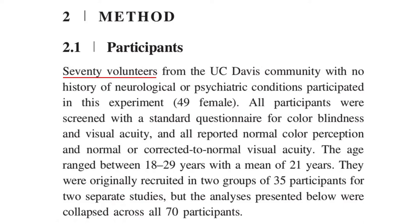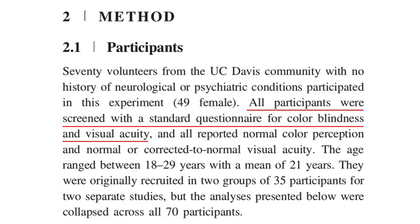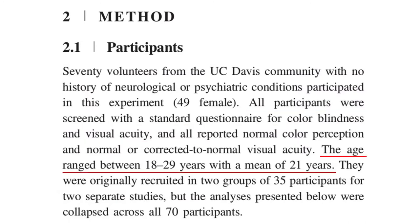We had a total of 70 participants, which is much more than you'd see in most ERP studies. A typical ERP study using within-subjects comparisons would have between 15 and 30 participants. Some ERP studies have more, especially when they're looking at between-group comparisons or individual differences. Statistical power in ERP experiments depends on both the number of subjects and the number of trials per subject. If you want to know more, I recommend this paper by Baker et al. Felix's study used colored stimuli, so he screened subjects for normal vision. The subjects were college students with an average age of 21 years.